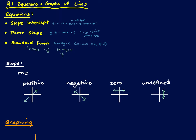The slope variable is m. If I have two points, I find it by doing y2 minus y1 over x2 minus x1. It's also known as rise over run. For the special cases, a horizontal line is y equals a number with no x, and the undefined case is x equals a number with no y.